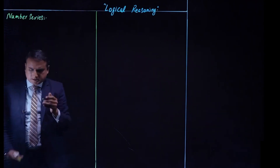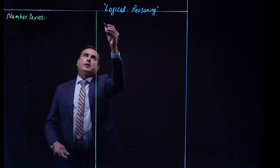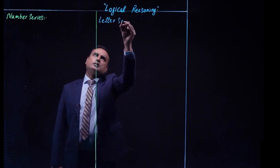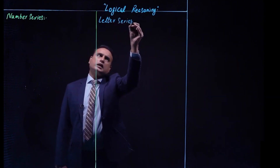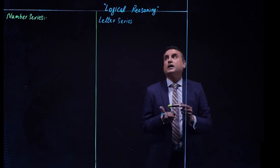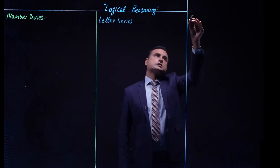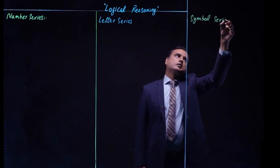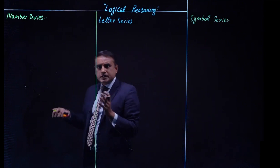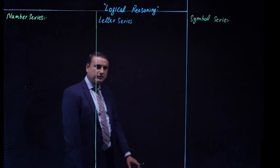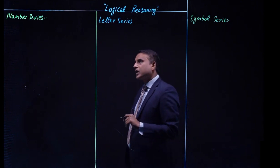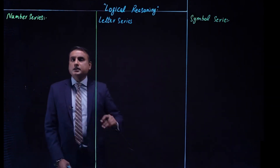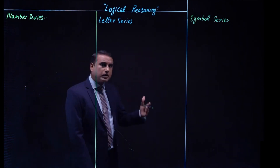Next we are going to look at number series, then letter series, and finally symbol series. It is one single question type but it has different variants as I've told you in the intro. In number series, you will be given a series of numbers in a certain pattern and then asked what number will actually follow.